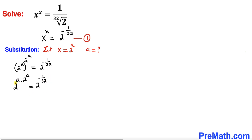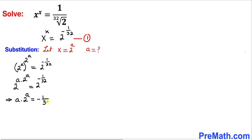Now let's apply the power rule of exponents. The left hand side becomes 2 power (a times 2 power a) equals to 2 power negative 1 divided by 32. We can equate the exponents: a times 2 power a equals to negative 1 divided by 32. Let me call this equation number 2.